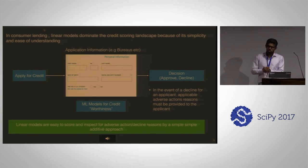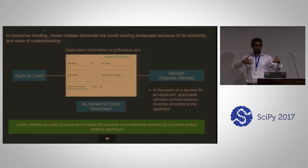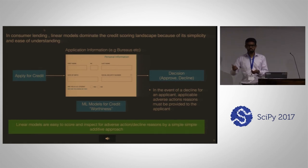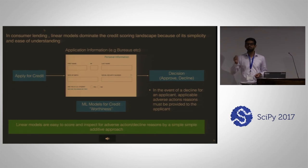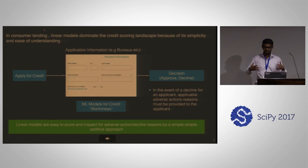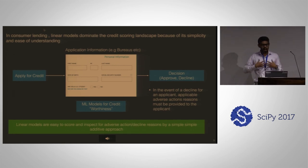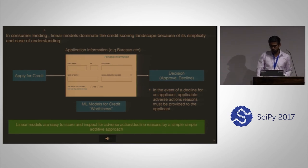Why do we care about GLMs? For my use cases, I work with a lot of financial services. If you are applying for a loan or a credit card, you go through an application process where your institution will score your application to gauge credit worthiness, and in the event that you are declined, by regulations the bank has to give you decline reasons. GLMs and linear models are very easy to inspect — you can get the decline reasons by just doing an additive variable selection. That's the context around why I care about Dask GLM and the linear model class of algorithms.